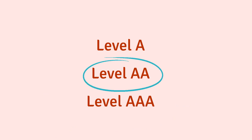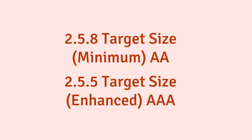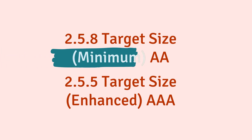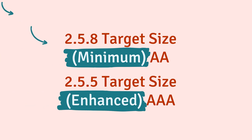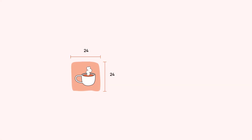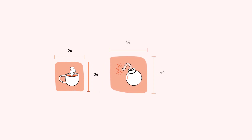WCAG 2.1 also features a AAA requirement that is now called 2.5.5 target size enhanced. The key difference between the two criteria is what is considered minimum. At level AA, the minimum target size is at least 24 by 24 CSS pixels. At level AAA, the minimum target size is at least 44 by 44 CSS pixels.